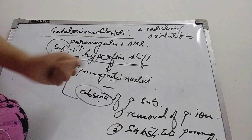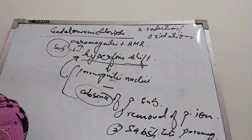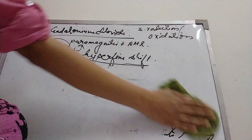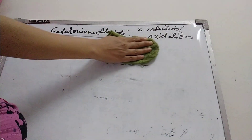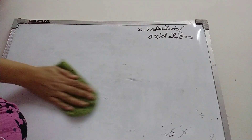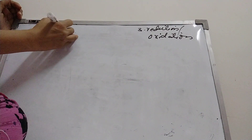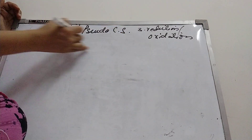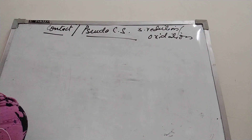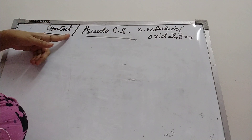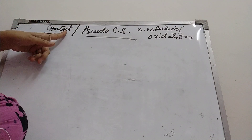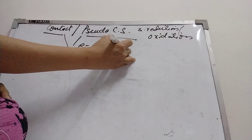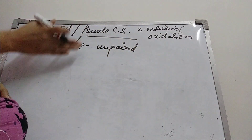Hyperfine shift consists of two components: contact shift and pseudo contact shift. Both of these arise because of the presence of unpaired electron spin density. Both are due to electrons which remain unpaired, and specifically due to the spin of that unpaired electron.